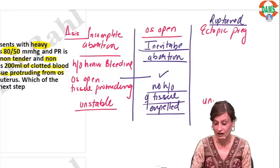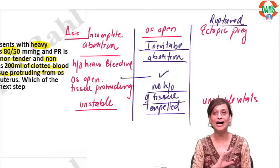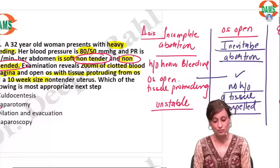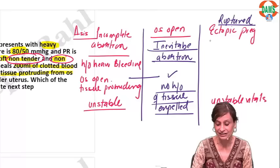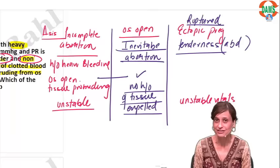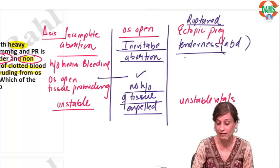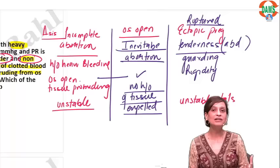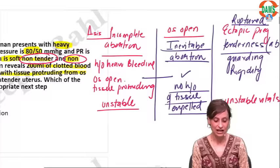But what things go against ruptured ectopic here? Look at the other keywords — the abdomen is non-tender and non-distended. If it is a ruptured ectopic, the finding would be pain and abdominal tenderness, because once a ruptured ectopic occurs there is peritonitis. So in peritonitis there will be abdominal tenderness; there may even be guarding and rigidity. No abdominal distension means no blood collected inside. These things tell us this is not a case of ruptured ectopic.